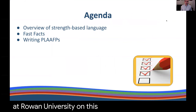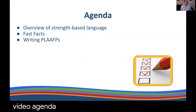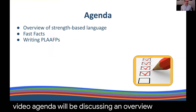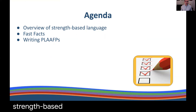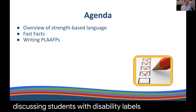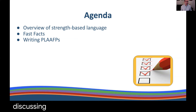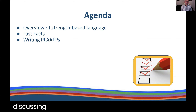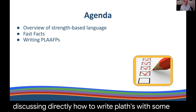and I'm an assistant professor of interdisciplinary and inclusive education at Rowan University. On this professional development video agenda, we'll be discussing an overview of strength-based language when writing IEPs or discussing students with disability labels, a tool called Fast Facts, and how to write PLAAFPs with some examples.